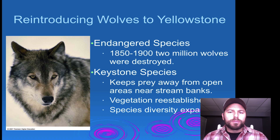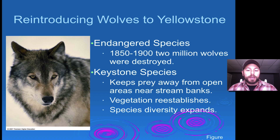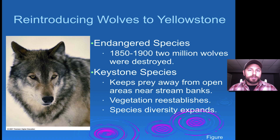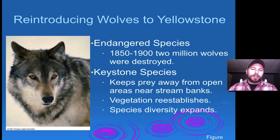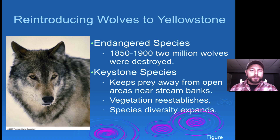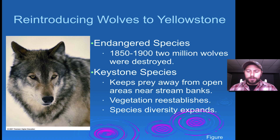We saw with the reintroduction of the wolves in Yellowstone that there were a number of different effects or trophic cascades that happened from their introduction. One was managing the deer population, which allowed certain vegetation to re-establish, and then ultimately that vegetation allowed for opening up of new habitat for certain songbirds and other birds coming to the area. So the wolves played a huge role in the Yellowstone ecosystem.